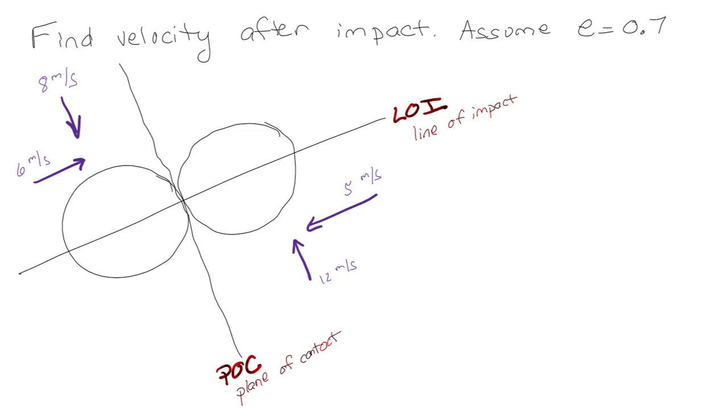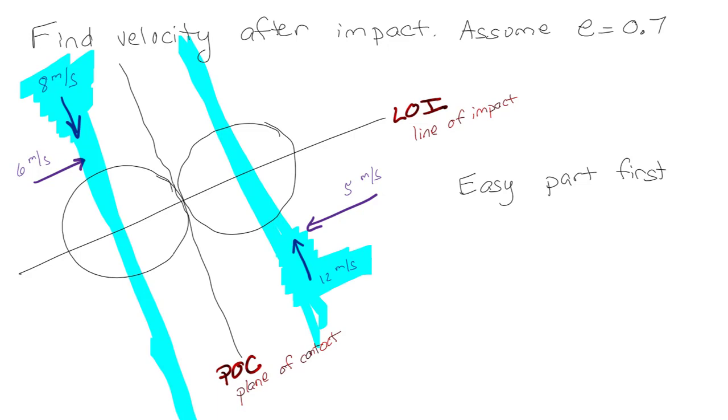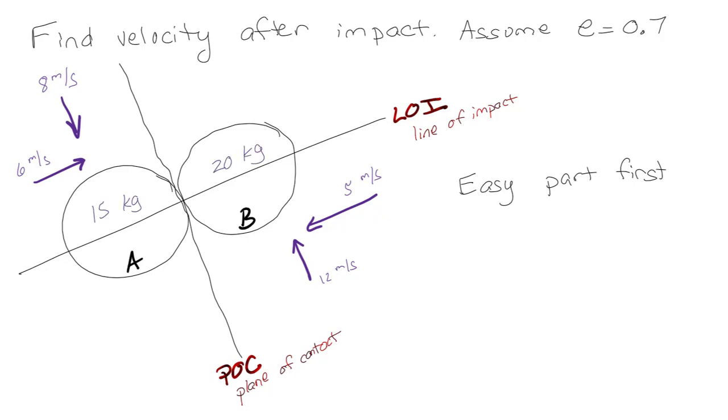Now, the thing that you always want to do is do the easy parts first. And that's everything in the plane of contact direction, the 12 and 8. So these guys, nothing's happening to them in this direction, so they stay the same before and after the impact. So if it's going 12 up before the impact, it's still going 8 down. Let's label this one. We need a couple more information things. So let's call that A and B, and I'll give you the mass of this one. We'll call this one 15 kilograms, and we'll call this one 20 kilograms.